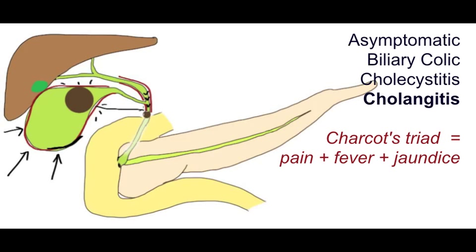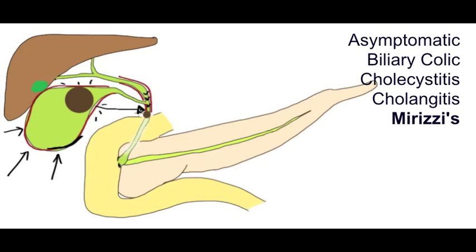Now if a gallstone compresses the CBD from within the gallbladder, this is called Mirizzi syndrome, and can also cause ascending cholangitis. At an undergraduate level, I really don't think you need to know more than this, except that it's pretty rare.